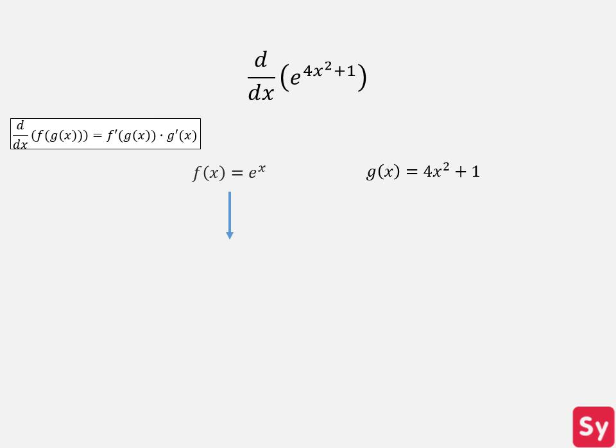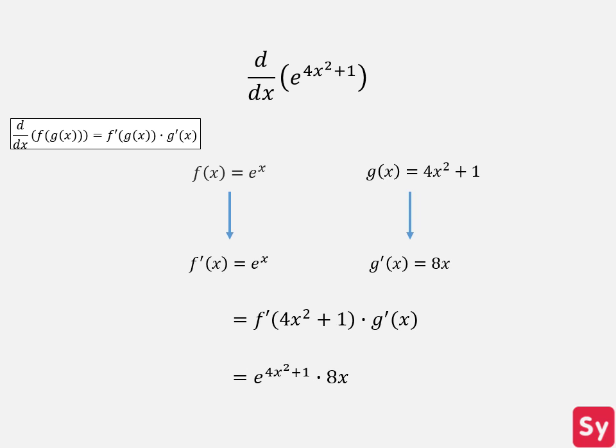First we will compute the derivative of the outer function. The derivative of f of x is equal to e to the x. Next we will compute the derivative of the inner function. The derivative of g of x is equal to 8x. Now we start plugging in values into the chain rule. The derivative is equal to f prime of 4x squared plus 1 times g prime of x. We plug in the respective derivatives and get e to the 4x squared plus 1 times 8x — our answer.